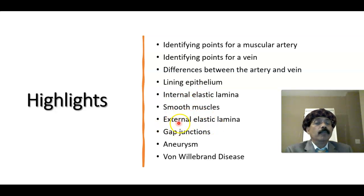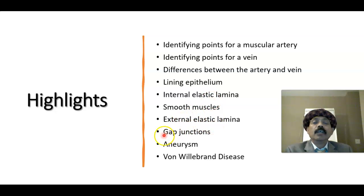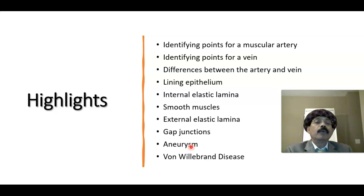The external elastic lamina is present but less distinct than the internal elastic lamina. An aneurysm — abnormal dilation of a blood vessel — may occur in Marfan syndrome, Ehlers-Danlos syndrome, or as part of the aging process, especially in the aorta or medium-sized arteries. If the aorta ruptures, it may be fatal.